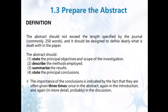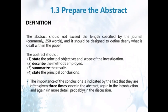Usually the abstract shouldn't exceed the length specified by the journal — commonly it cannot exceed 250 words — and it should be designed to define clearly what is dealt with in the paper. The abstract should: first, state the principal objectives and scope of the investigation; second, describe the methods used; third, summarize the results; and last, state the principal conclusions.